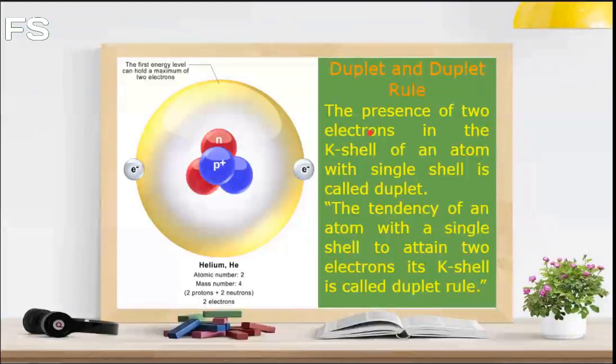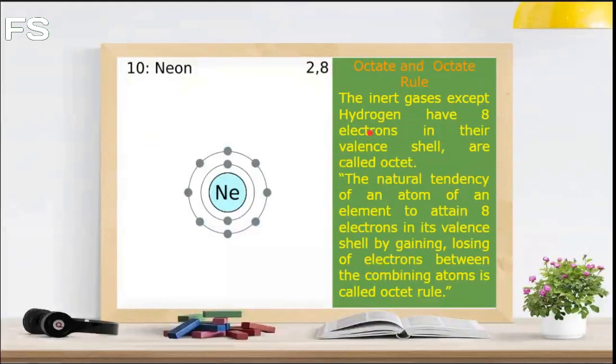Now let us talk about octet and octet rule. The inert gases such as neon, argon, krypton, xenon, and radon, except helium, have eight electrons in their valence shell and are called octet.